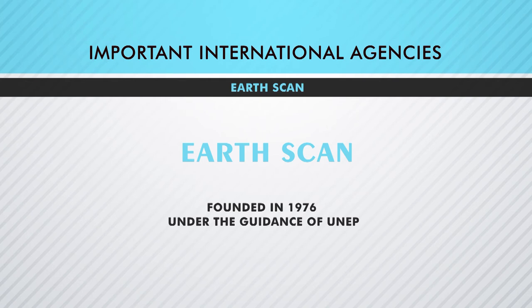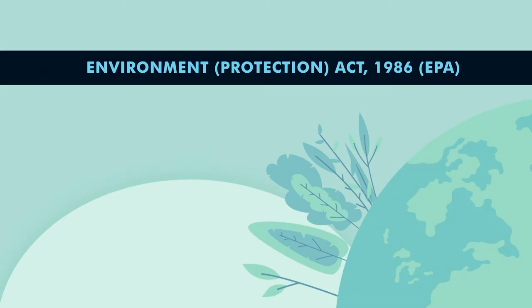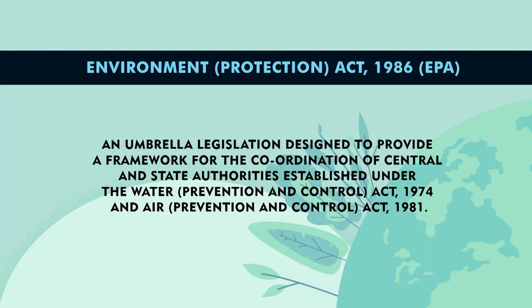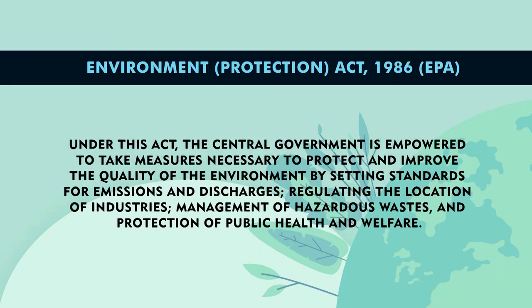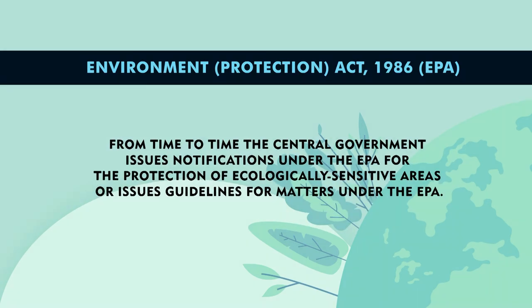The Environmental Protection Act 1986 is an umbrella legislation designated as a framework for the coordination of central and state authorities established under the Water Prevention and Control Act 1974 and Air Prevention and Control Act 1981. Under EPA 1986, the Central Government is empowered to take measures necessary to protect and improve the quality of the environment by setting standards of emission and discharge, by regulating the location of industries, by managing hazardous waste, and by protecting public health and welfare. From time to time the Central Government issues notifications under this act for protecting ecological and sensitive areas.